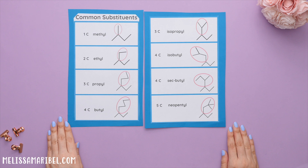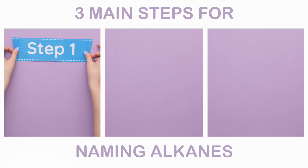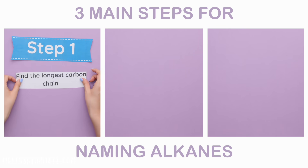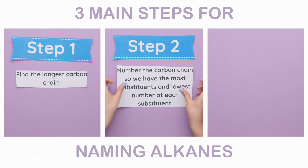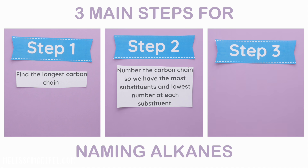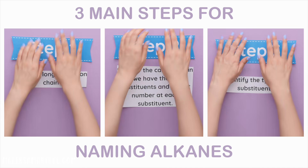For naming alkanes, we will follow these three main steps each time. Step one: find the longest carbon chain. Step two: number the carbon chain so we have the most substituents and lowest number at each substituent. Step three: identify the type of substituent.